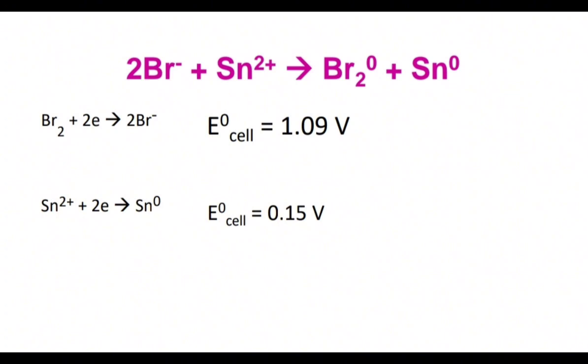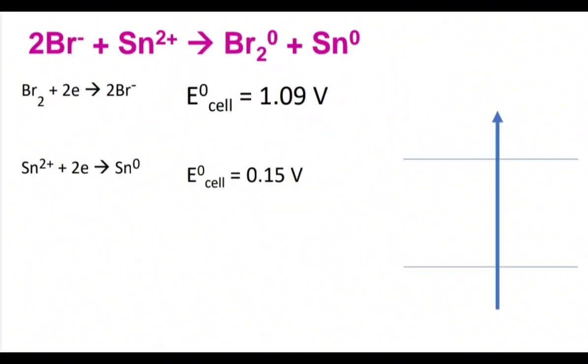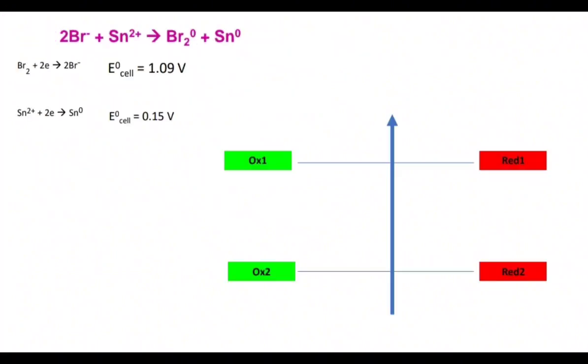So for bromine it's higher—this value is higher. We draw such an arrow as you see. On the left side we will draw oxidizers; on the right side we will draw reducers.